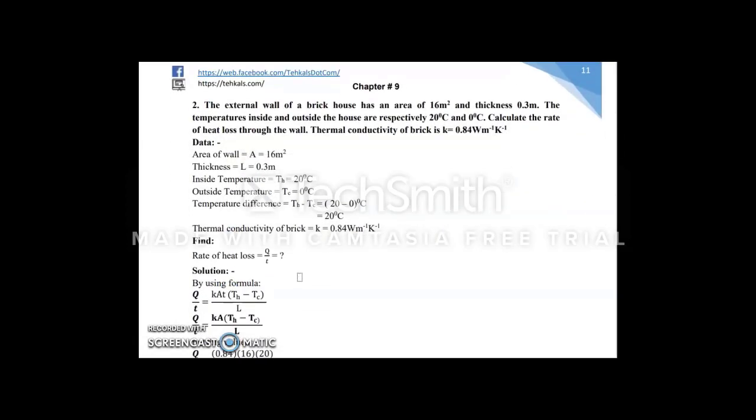Moving towards the second numerical, same formula. We have a brick wall, area is 16 meter square, and the thickness is 0.3 meter. Outside the wall temperature, inside temperature is 20 degrees centigrade. This is given respectively: first inside, then outside. Outside temperature is 0 degrees centigrade. Then we have conductivity 0.84. We have to find the rate of heat loss. When rate comes, this means we have time, heat loss per unit time. The word rate means amount of heat loss per unit time.